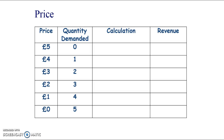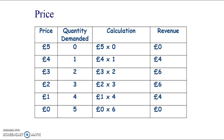Let's look at how we calculate revenue — this is also important for the finance part of the course. Revenue is simply price times quantity. So if we set the price at five pounds, nobody wants the product and we raise zero revenue. Going through the data, we see that setting the price at three pounds or two pounds is where revenue is maximized.